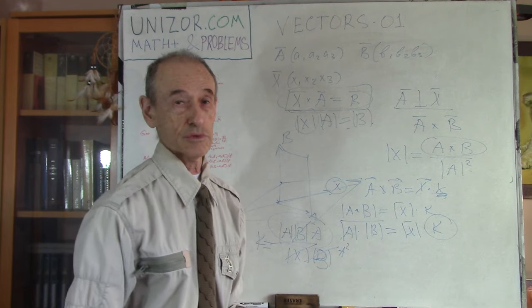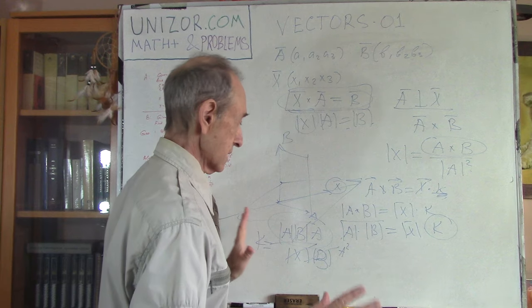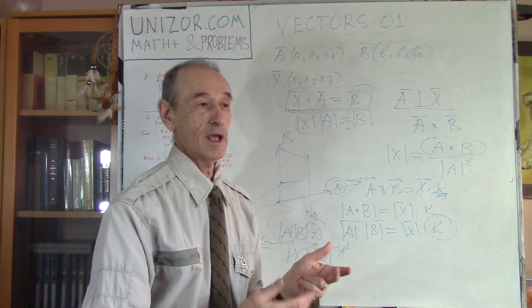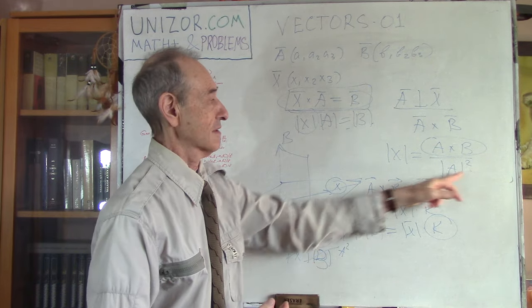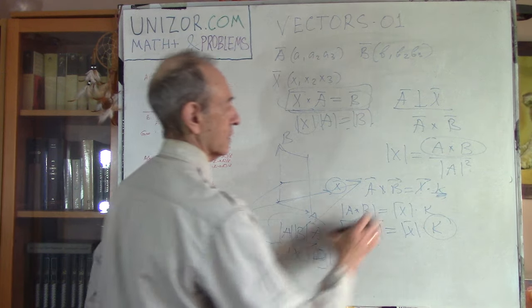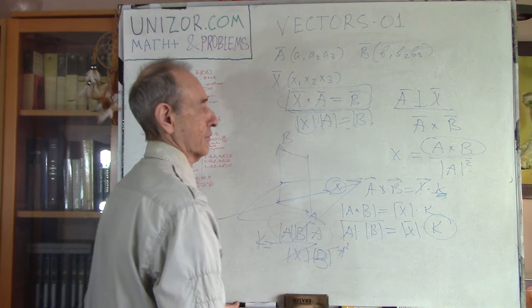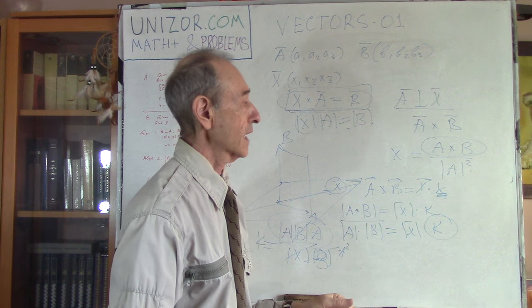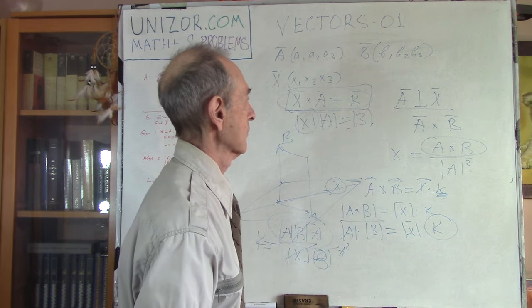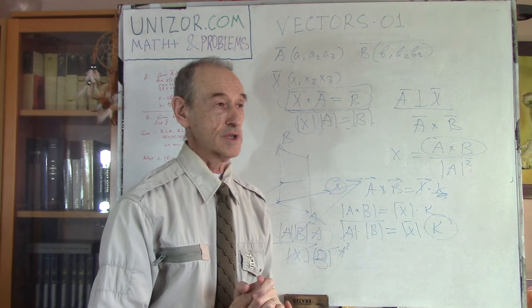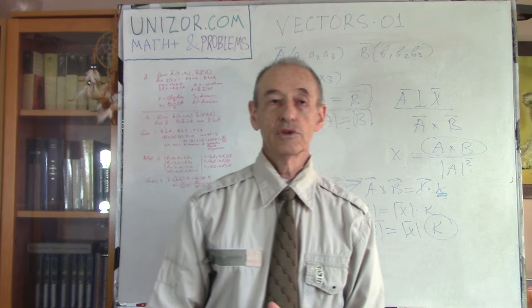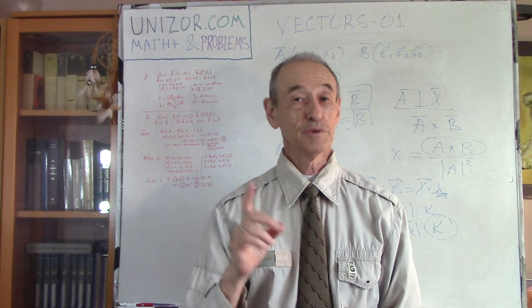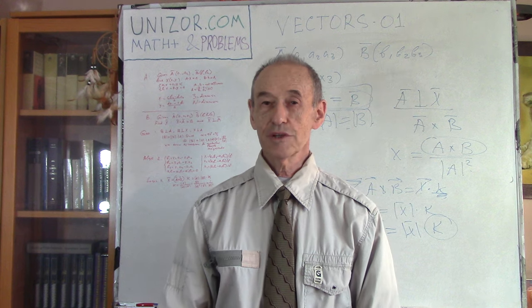So that's it. We approached this problem from a geometrical standpoint and from an algebraic standpoint, arriving at the formula X = (A×B) / |A|². I suggest you read the notes for this lecture — they contain detailed calculations for the algebraic case. It's very important to try it yourself. Thank you very much and good luck.